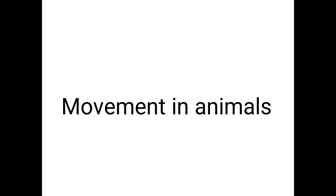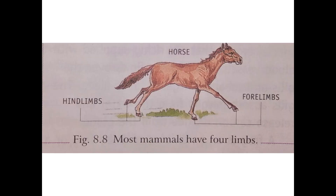Now let us discuss movement in animals. Animals need to move to search for food, to protect themselves and their babies from being hunted, and for building resting and breeding places. Different animals move in different ways. In the case of land animals — most mammals have four limbs: two front limbs and two hind limbs at the back, and most mammals use their four limbs to move.